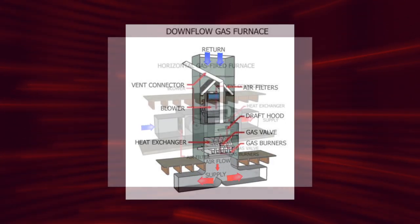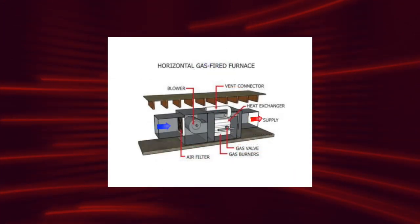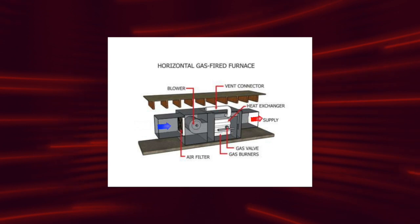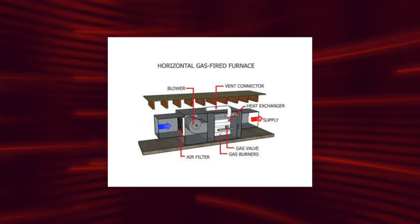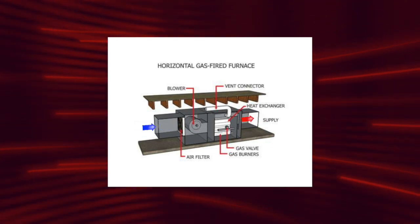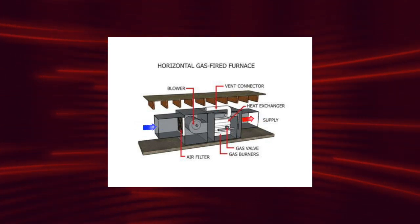In a horizontal system configuration, the unit is laying on its side and the air flows in from one side and out the other side. This type of system is most common in attics and in crawl spaces.